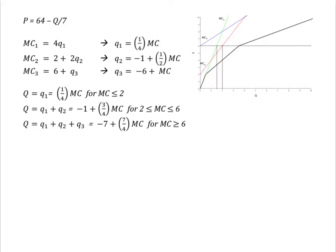To find the intersection of marginal revenue and marginal cost, we first need to solve for marginal cost as a function of our total output along each segment and then add demand to our analysis.